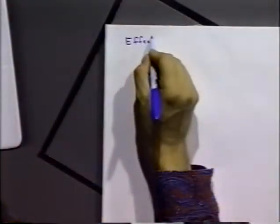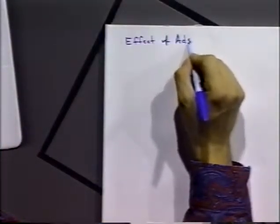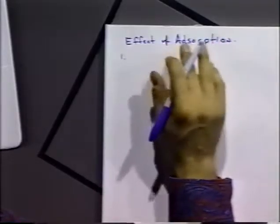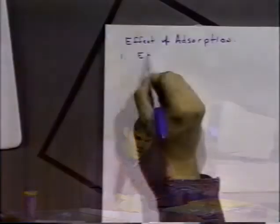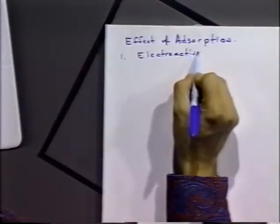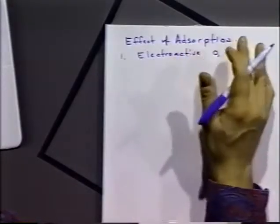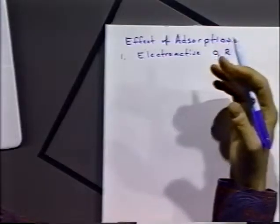Let's talk about the effect of adsorption. We can adsorb all kinds of molecules to the surface. One type would be what we call electroactive molecules, where the molecule itself is an oxidizable or reducible molecule — R and O in our scheme. Those molecules may be adsorbed on the electrode itself, so the electrochemistry would be significantly different than molecules in solution. Rather than diffusing to the electrode and undergoing electron transfer, these molecules are adsorbed directly and then undergo an electrode reaction.